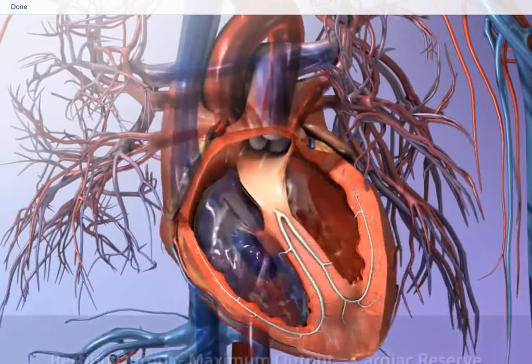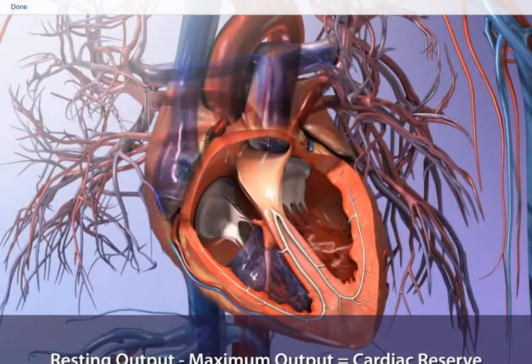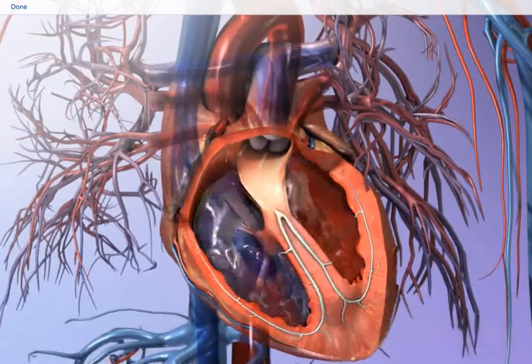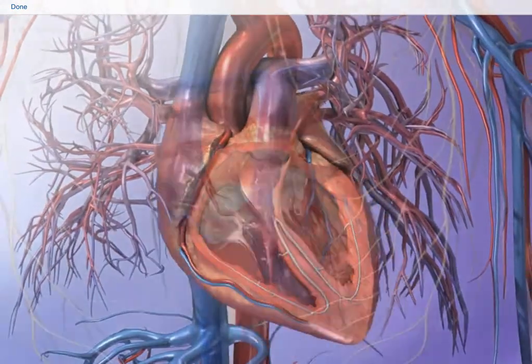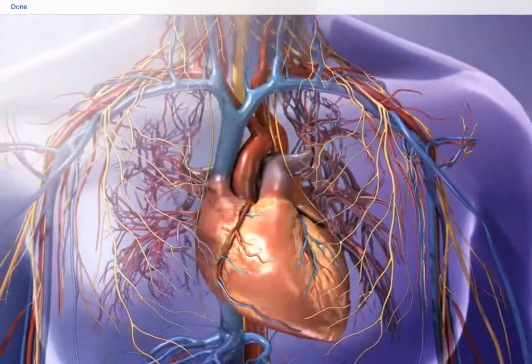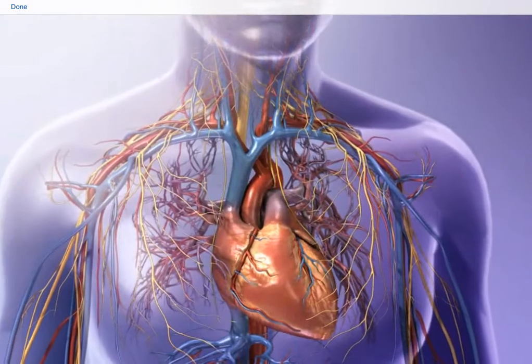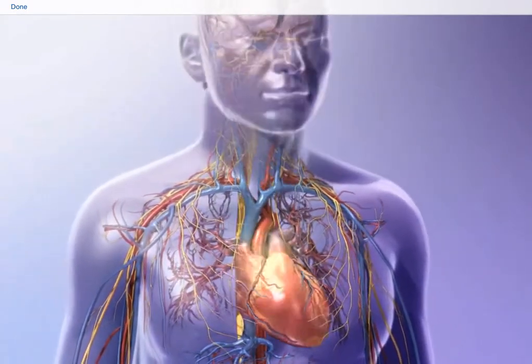Cardiac output increases with physical activity, rising to a maximum that may be four to seven times greater than the resting output. This difference between resting and maximum output is known as cardiac reserve. Heart rate and stroke volume are regulated by the autonomic nervous system and by hormones in the bloodstream. Other factors such as age, weight, and physical fitness also influence cardiac output.